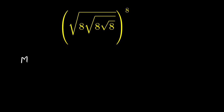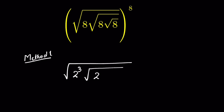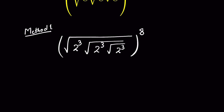Let's try Method 1. We write 8 as 2 to the power 3, then times square root of 8 as 2 to the power 3, and square root of 8 again as 2 to the power 3, then the whole expression raised to the power 8. Now this square root means 2 raised to the power 3 is raised to the power of 1/2.